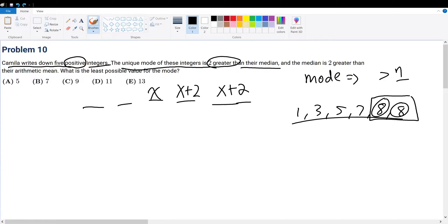Now, with this, we can continue. The median is 2 greater than the arithmetic mean. The arithmetic mean is the sum of all numbers divided by the number of numbers. I'm not given any information about these two numbers, so let's just assume that these are a and b. The arithmetic mean would therefore be a plus b plus 3x plus 4 divided by 5.